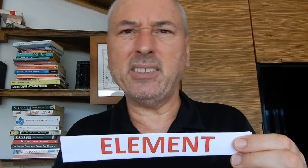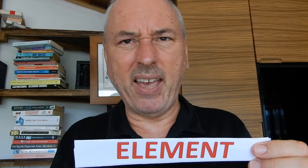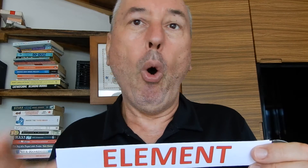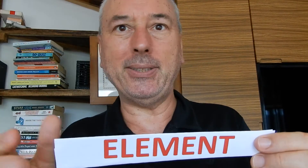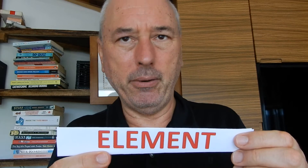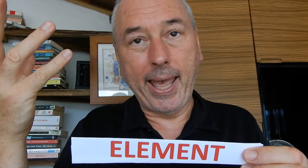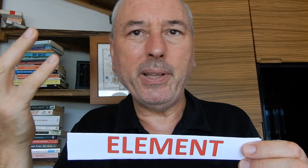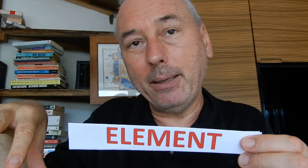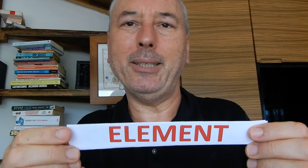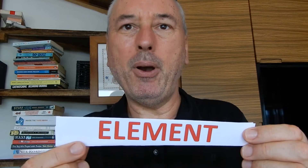Mostly we join atoms together to make compounds, or we mix them together to make mixtures. Only a few elements are in your home. There's oxygen in the air, but it's mixed up with nitrogen and a little bit of argon, so it's called a mixture. If it's an element, it has to be just one type of atom, like a diamond.